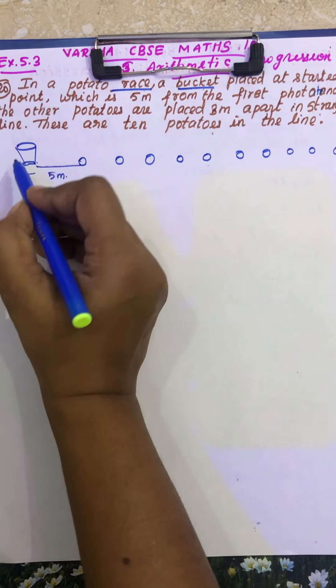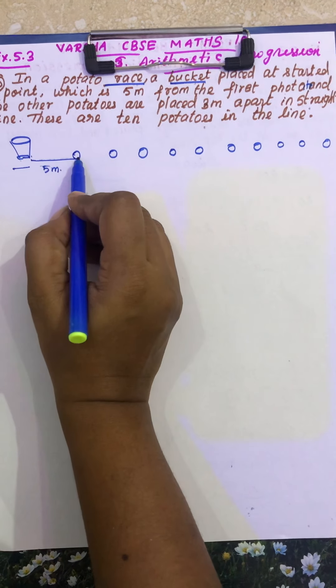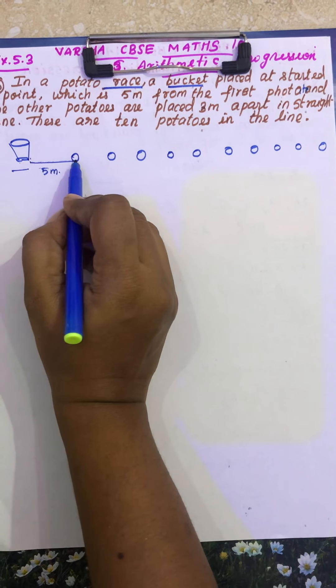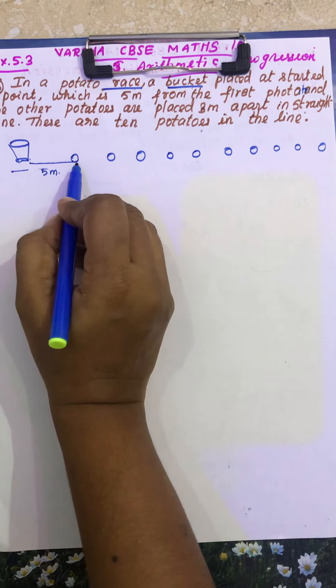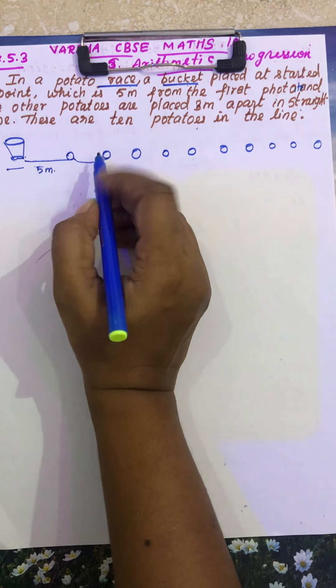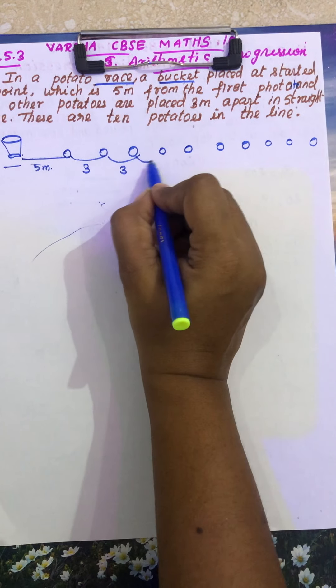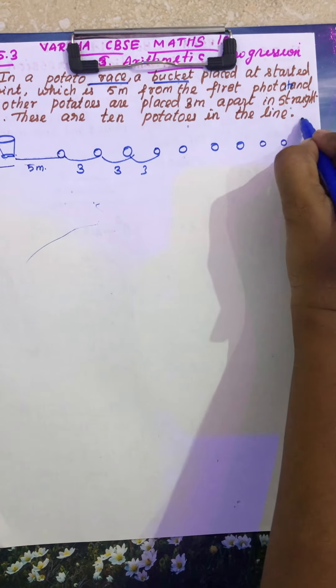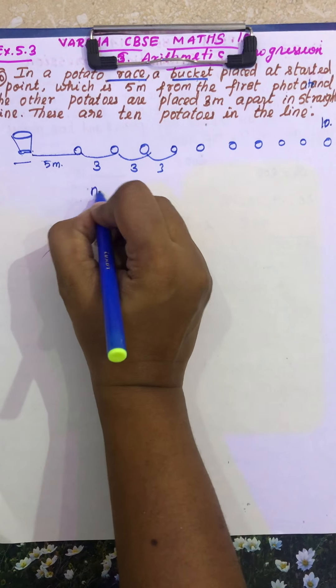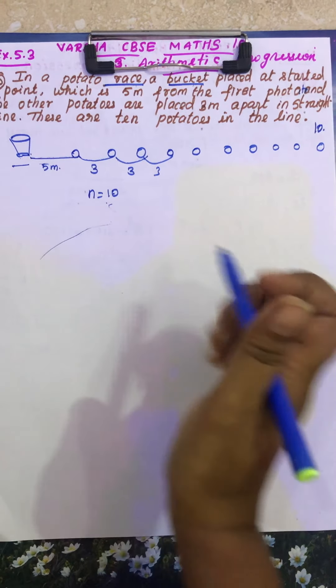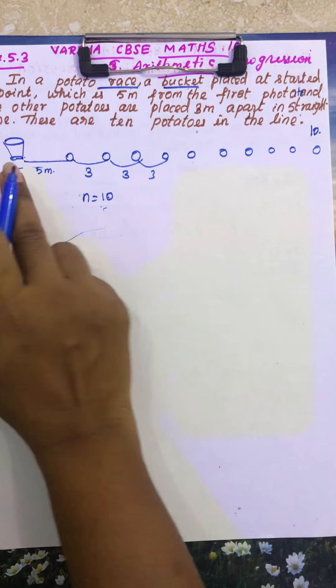See students, there is a bucket here. This is a potato race, so first potato is placed at 5 meters, the next potato is placed at 3 meters, so next potato is 3 meters, so next potato is, so there are 10 potatoes. So N is equal to 10, only 10.